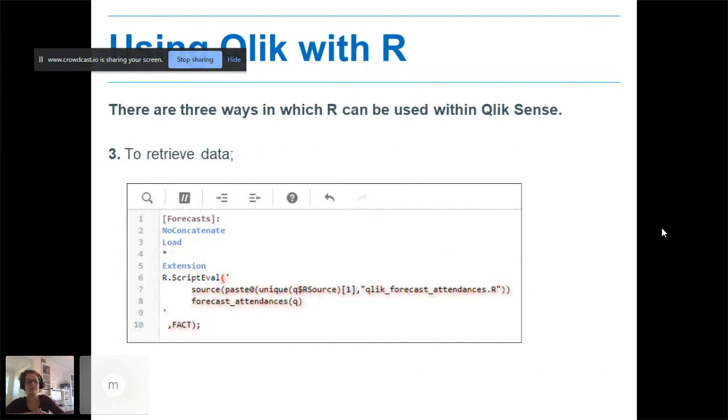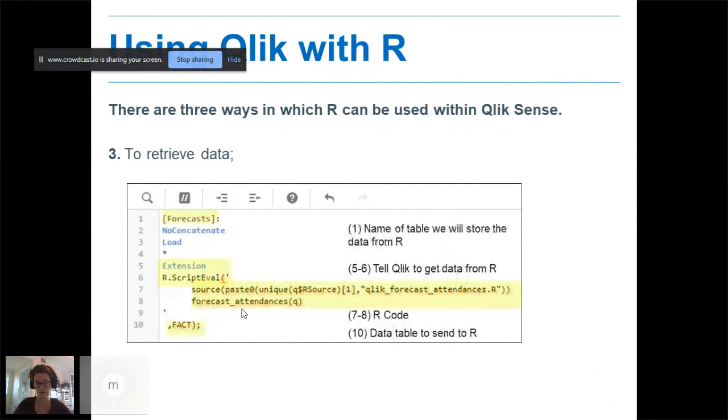So the final way we can use R with Qlik Sense is to retrieve a data set in memory. This is what I use to productionize our new forecasting model. For example, in Qlik we've got some forecasts we're retrieving and we're loading the data into Qlik. We're saying let's load it from R analytical connector extension. And it's going to run that code and return the forecast that you're generating. Forecast is the name of the table. Lines five to six tell Qlik to get the data from R. Lines seven to eight is all your R code. And here, a_fact is the name of the table of the data that you're sending to R. In this case, a_fact would be probably our historical A&E attendances or admissions that we're pinging to R, generating our forecast, and then bringing them back into Qlik in memory.